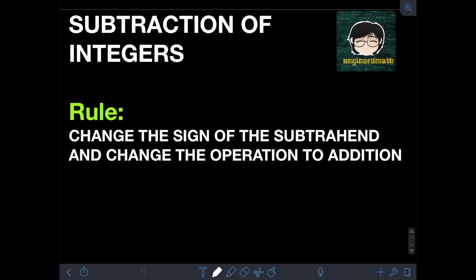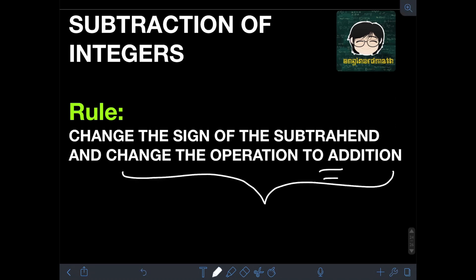Going back, in subtraction of integers, just like in addition of integers, we will just follow a simple rule. The rule is that we have to change the sign of the subtrahend and change the operation to addition. So once we have changed the sign of the subtrahend, we will change the operation to addition — that's why we will need the knowledge on addition of integers.